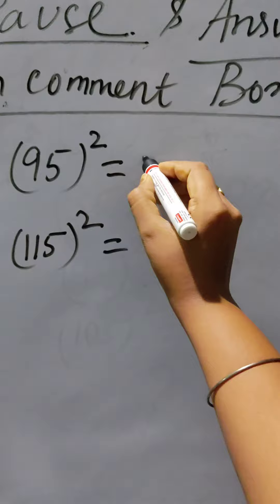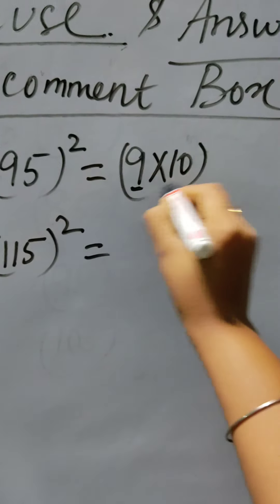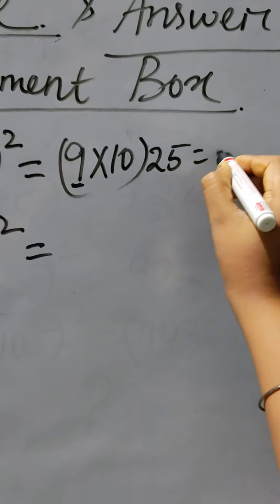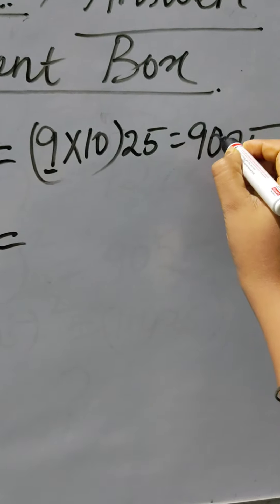For the square of 95, you can see that in the tens place it is 9. After 9, 10 will come. So it is 90 times 25, that is 9025. How will you do this?